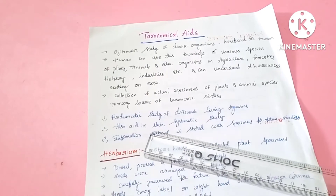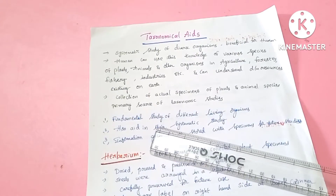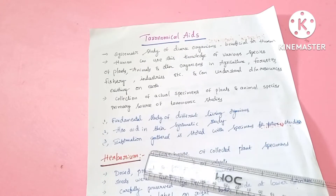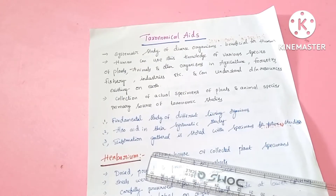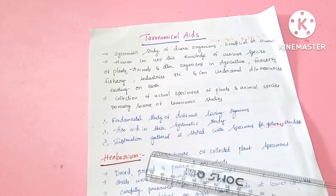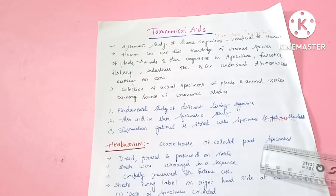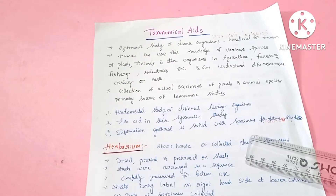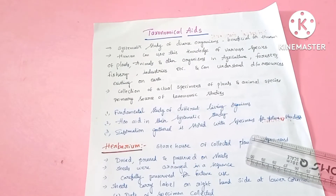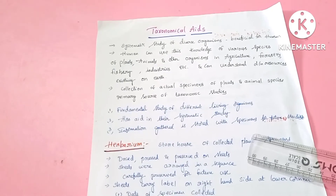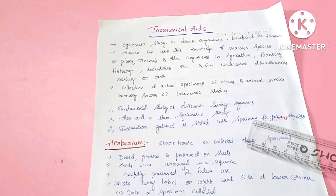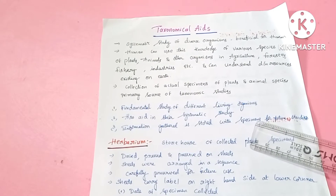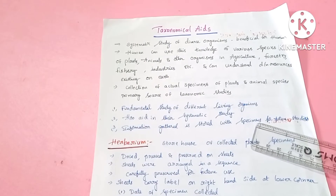We have to do systematic studies and gather information for future study in specimen form. Now, what are the different types of taxonomical aids?